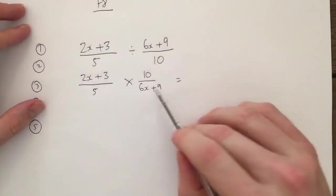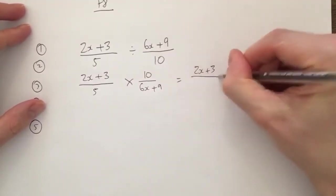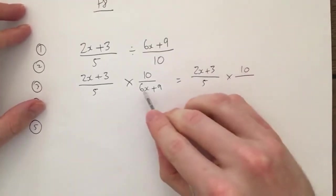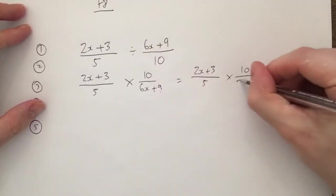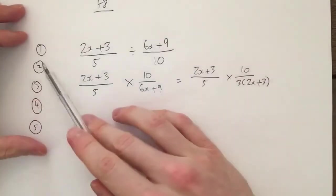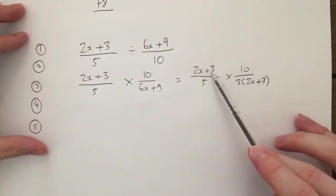So therefore I'm going to do it here so I've got space for my last example coming up for F8. So I'll rewrite out the first fraction, 2x plus 3 over 5, times by 10 over, both of them go into 3 times table, so 3 comes out bracket 2x plus 3. Okay, that's us factorizing it.